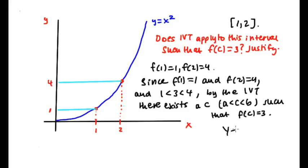And of course, you need to say yes, that this is true, there is a c. And what is that c? Well, plug in 3 for y. So you get 3 equals x squared. Square root both sides. So radical 3 equals x. So your c is going to be radical 3. And radical 3 squared is 3. So there you have it. That's our example that I promised.